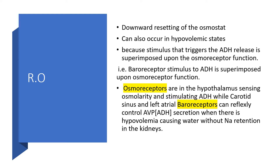The downward resetting of the osmostat can also occur in hypovolemic states. With that, the stimulus that triggers the ADH release is superimposed upon the osmoreceptor function — meaning the baroreceptor stimulus to ADH is superimposed upon osmoreceptor function. Osmoreceptors are in the hypothalamus, sensing osmolarity and stimulating ADH, while carotid sinus and left atrial baroreceptors can reflexly control vasopressin, also known as ADH. When there is hypovolemia, that leads to water retention without sodium retention in the kidneys.